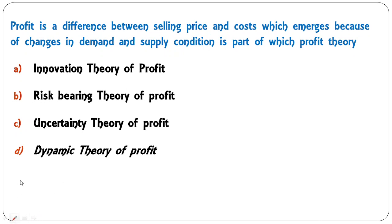Profit is the difference between selling price and costs, which emerges because of changes in demand and supply conditions. This is part of which profit theory — innovation theory, risk-bearing theory, uncertainty theory, or dynamic theory? This concept is part of the dynamic theory of profit, associated with J.B. Clark.